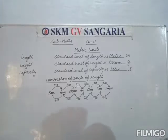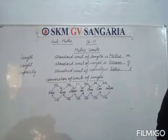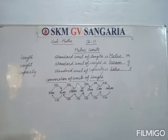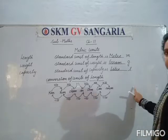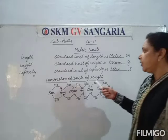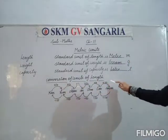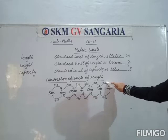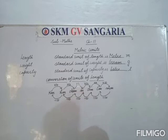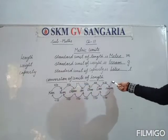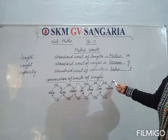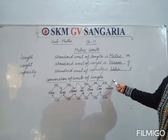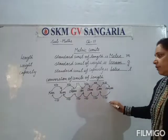All the higher and lower units are derived from these standard units. We can convert a higher unit of length into a lower unit by multiplying by 10, and a lower unit of length into a higher unit by dividing by 10.